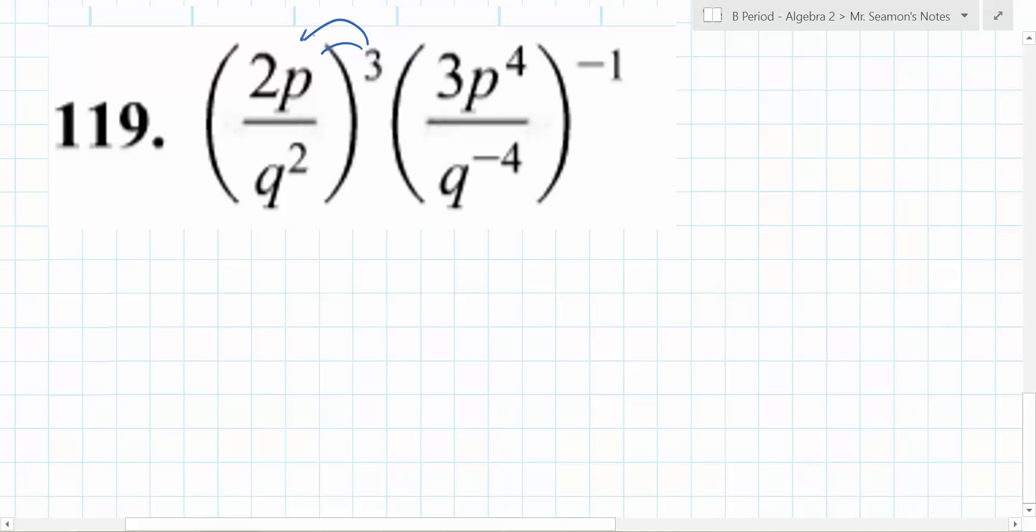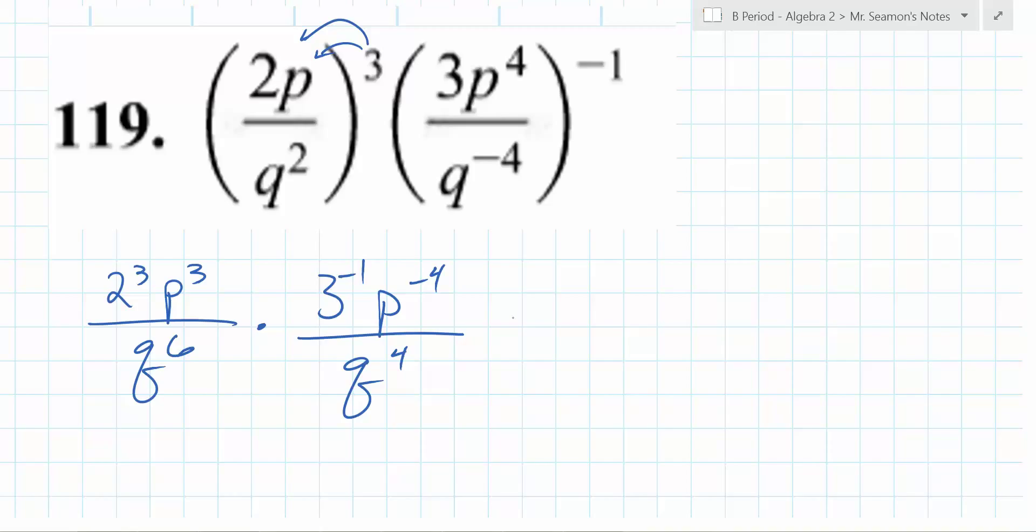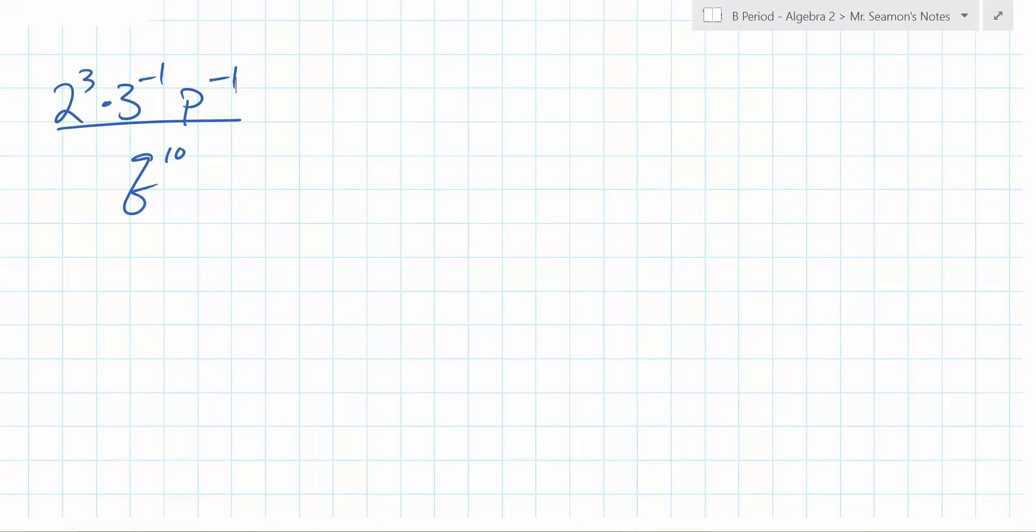First, this is the way I would do it. I would take that 3 and I'd plug it into both of them. So it's 2 to the 3rd, p to the 3rd, over q to the what? 6th. Times 3 to the negative 1, p to the negative 4, over q to the what power? 4. I would then simplify things piece by piece. If you try to stop, if you try to do too many things at once, you will do something small wrong and then be very sad at the end. What is q to the 6th times q to the 4th? q to the 10th. So I'm just simplifying the bottom as q to the 10th right now. What's p to the 3rd times p to the negative 4th? p to the what? Negative 1. So you have 2 to the 3rd times 3 to the negative 1 times p to the what power? Negative 1. What can I do now? Can someone say clearly what I could do now? Gabby.